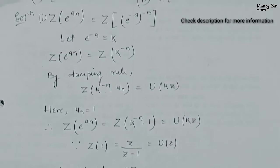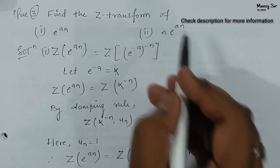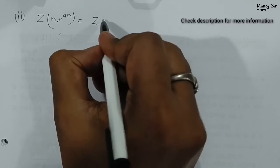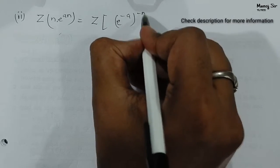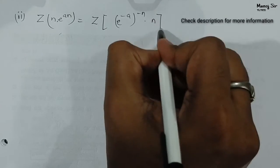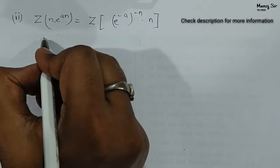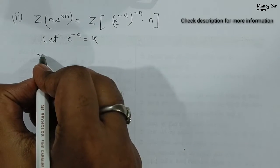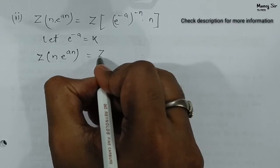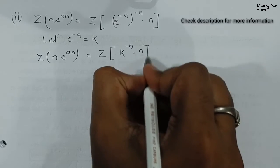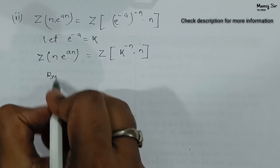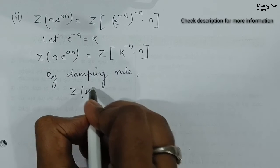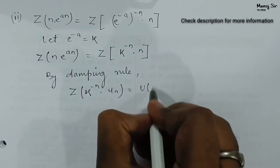Now we will solve the second part: find Z transform of n into e to the power an. We can rewrite this as Z transform of e to the power minus a, to the power minus n, into n. Let e to the power minus a equals k. So Z transform of n into e to the power an equals Z transform of k to the power minus n into n. By damping rule, Z transform of k to the power minus n into u(n) equals U(kz).